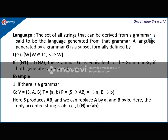Coming to the definition of a language: the set of all strings that can be derived from a grammar is the language generated by that grammar. Formally, L(G) = {W | W ∈ T* such that S derives W}. If L(G1) = L(G2), then grammar G1 is equivalent to grammar G2 if both generate the same set of strings.